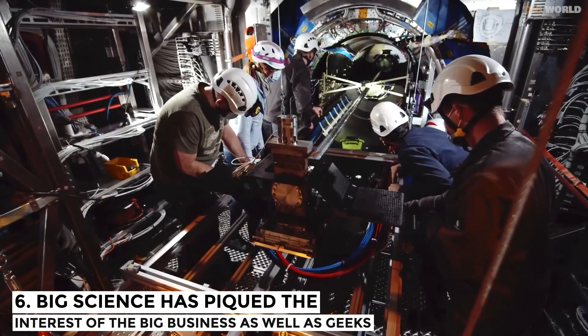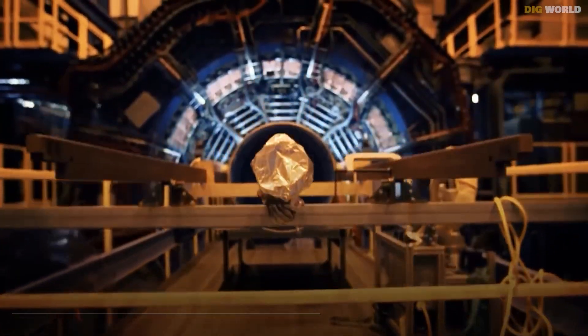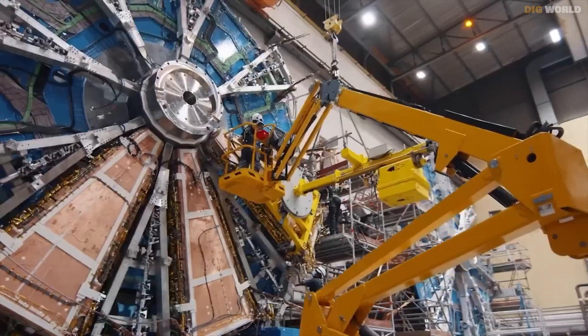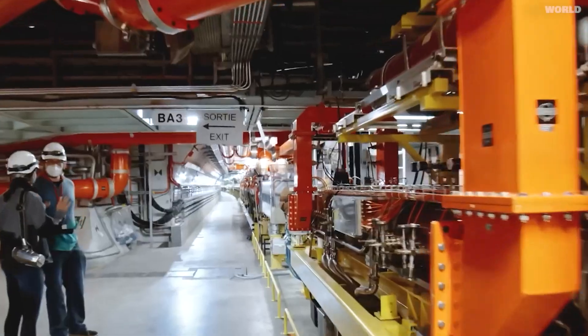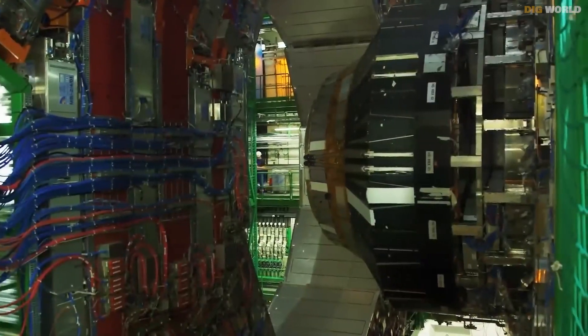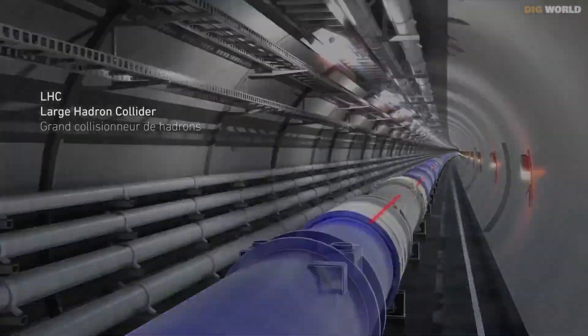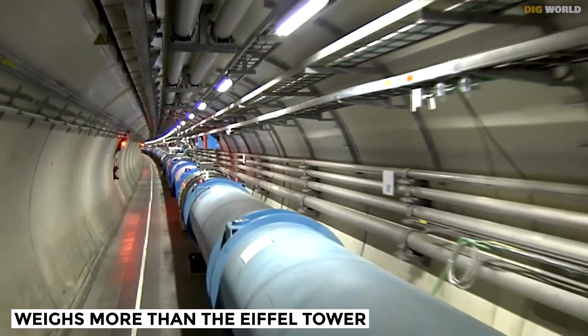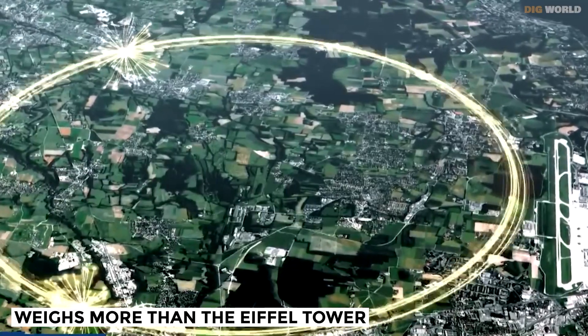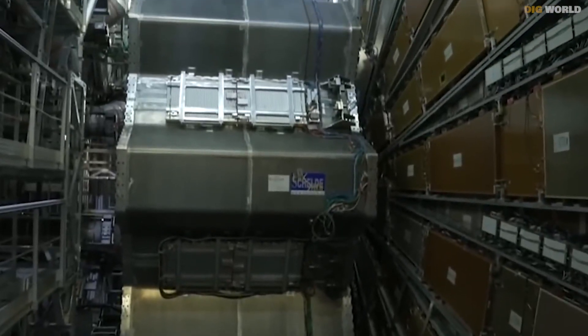Number 6. Big science has piqued the interest of big business as well as geeks. Over 12,500 scientists from more than 110 countries work together at CERN in a culture where authority is based on intellectual contributions rather than hierarchy, and colleagues typically share a sense of purpose. Furthermore, massive teamwork is required to develop something like the CMS detector, which weighs more than the Eiffel Tower, is connected by 3,000 kilometers of cable, and involves components produced by hundreds of companies across five continents.